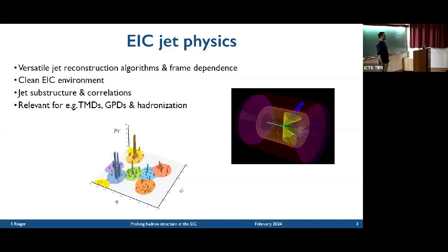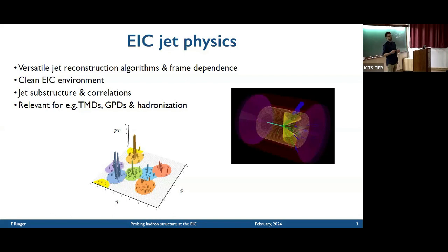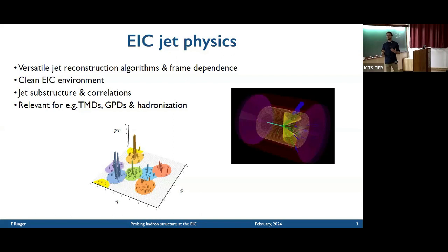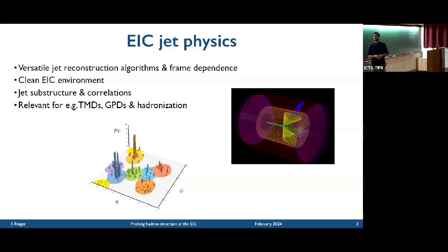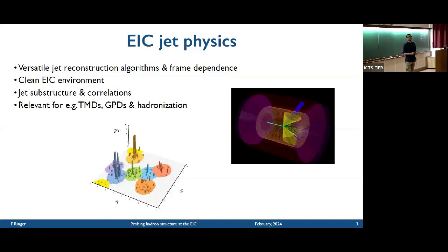This was an example from the LHC, but also at the EIC we will have jet physics. They will look a little bit different, but generally there will be jets produced at the EIC and they're really a versatile tool in various aspects of the EIC science program. Because we have this asymmetric collision of electrons and protons, there are actually more options to make use of jets — different jet algorithms, different frames — and that really allows us various handles on jets that we don't have in PP. Another advantage is that we'll have a very clean environment at the EIC, so things like pileup and multi-parton interactions are not going to be as much of a problem. There's a whole range of observables we could look at in the context of jet substructure — TMDs, GPDs, hadronization, nuclear modification, and so on.